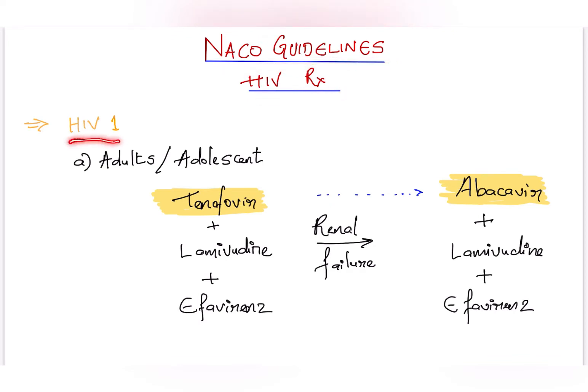In case of HIV-1, for adults or adolescents, a combination of tenofovir, lamivudine, and efavirenz is used. If the patient is suffering from renal failure, then tenofovir is replaced by abacavir. The rest of the drugs are the same, lamivudine and efavirenz.